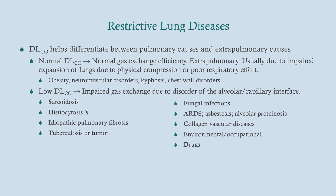With a normal DLCO, we know gas exchange efficiency is normal, so the cause is probably extra-pulmonary — difficulty filling the lungs for reasons other than problems with the lungs themselves. Examples include obesity, where pressure on the lungs makes them hard to fill; neuromuscular disorders like myasthenia gravis, where you have difficulty expanding the muscles to expand the lungs; and kyphosis or chest wall disorders like pectus excavatum or pectus carinatum.